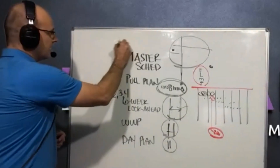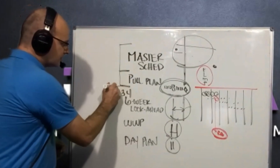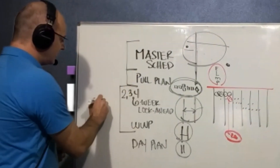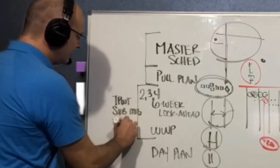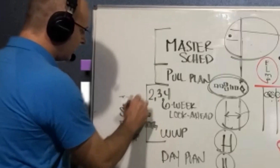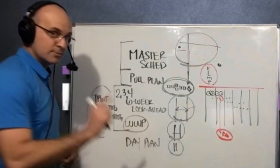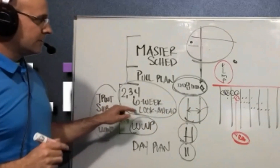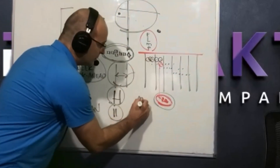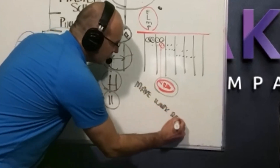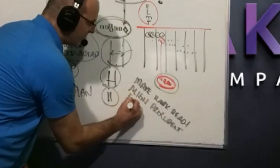The master schedule is reviewed on a weekly basis with your project team. Your pull plan happens whenever you need it. Your look-ahead schedule and weekly work plan are reviewed weekly in your trade partner weekly tactical — some call it the sub-meeting, trade meeting, or last planner meeting. This is where you develop a weekly work plan, review the look-ahead activities, make sure they're ready, identify roadblocks, make work ready, and align procurement so it hits those dates.